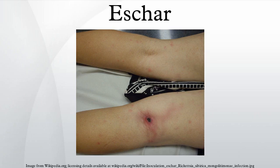An eschar is a slough or piece of dead tissue that is cast off from the surface of the skin, particularly after a burn injury, but also seen in gangrene, ulcer, fungal infections, necrotizing spider bite wounds, and exposure to cutaneous anthrax.